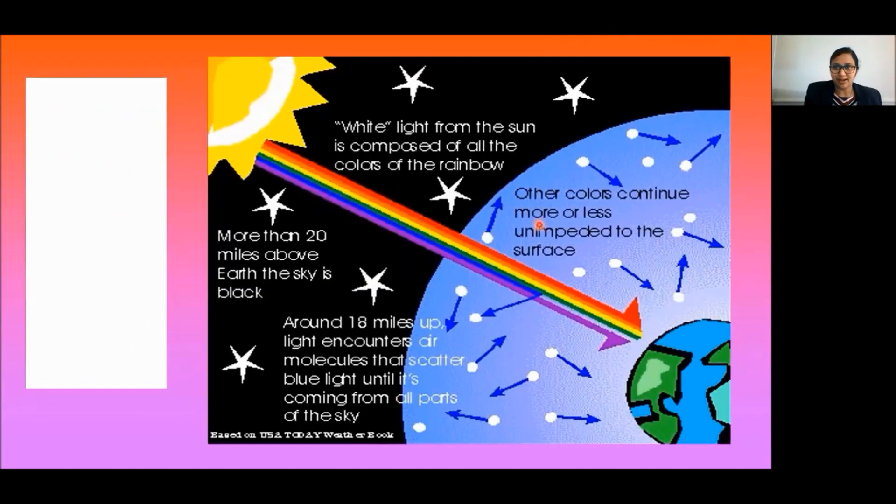If earth had no atmosphere, there would not be any scattering of light and the sky would appear dark. The sky appears dark at very high altitudes.